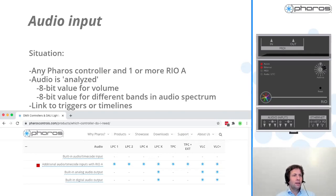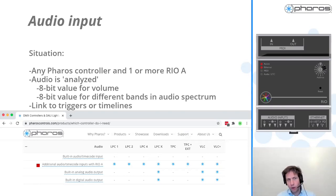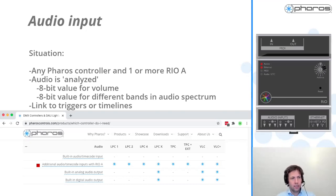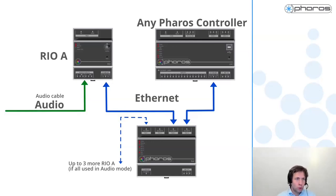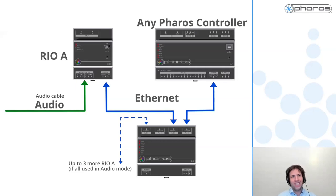Volume is being analyzed into an 8-bit value, and we can analyze different audio bands - the bass, the mid-range, and the treble - and analyze how much that is available as an 8-bit value in Designer. You cannot directly connect a microphone to this system - there needs to be some sort of audio system in between. But if you have this type of application, these audio systems will be available. We just need to be able to receive a signal from that audio system.